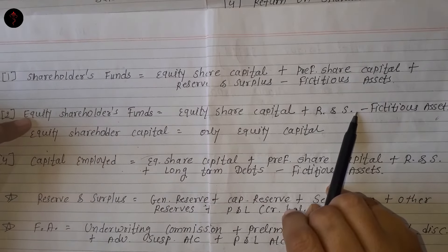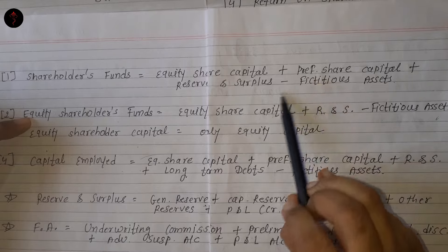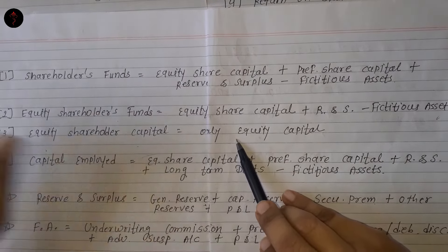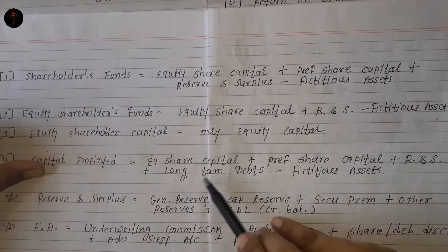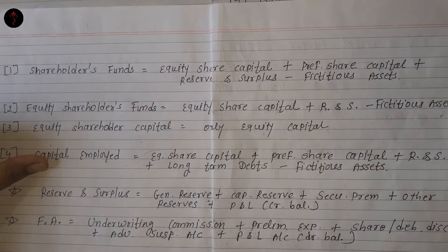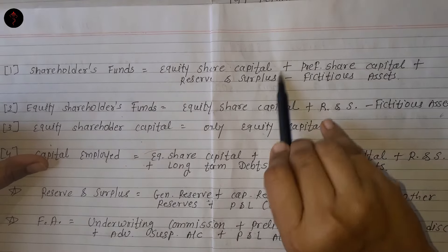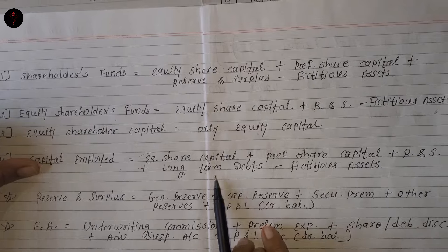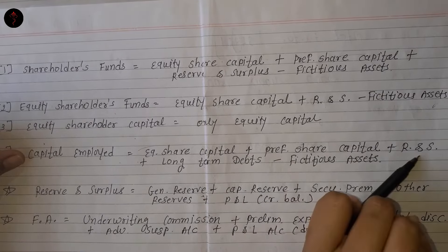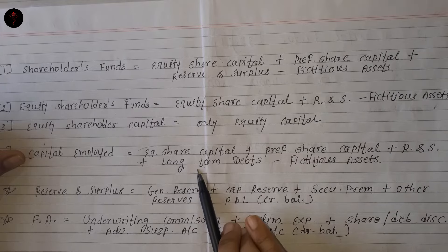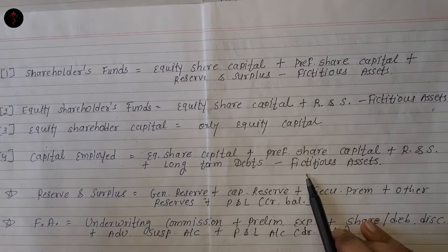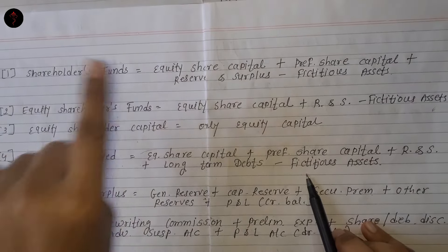Equity shareholders' fund में preference will not be included, because it is return on equity. Equity shareholders' capital में only equity capital. Capital employed includes everything. Shareholders' funds और capital employed में सिर्फ एक difference है — long term debts is not included in shareholders' funds, while capital employed includes long term debts. So equity share capital plus preference share capital plus reserve and surplus plus long term debts minus fictitious assets.